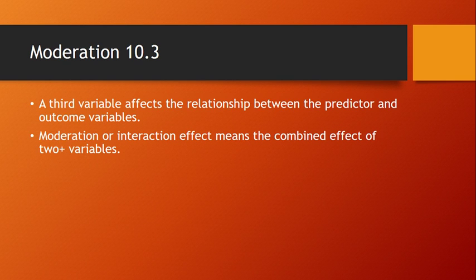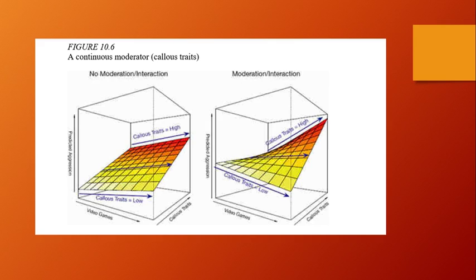10.3 started discussing moderation. Moderation can be defined as a third variable that affects the relationship between the predictor and outcome variables. Moderation is also sometimes called interaction effect, meaning the combined effect of two or more variables. The Field book had a really good image for this that was well described, and I've shared it here. It shows a conceptual idea of moderation: when there's no moderation or interaction effect, all your variables progress on their own lines and stay proportional. But when there is a moderation or interaction effect, the change in one variable causes more changes in the other variables, so instead of a proportional plane, it becomes twisted and skewed — more of one variable plus more of a second variable equals much more of a third variable.